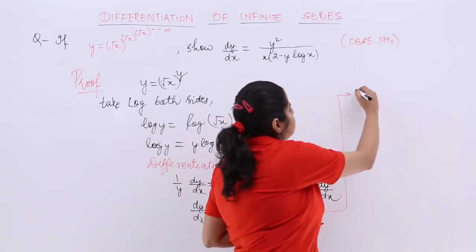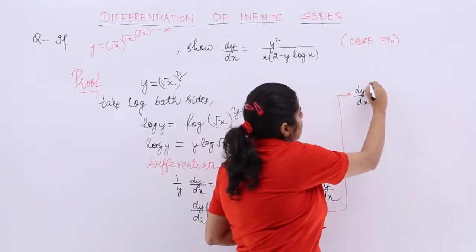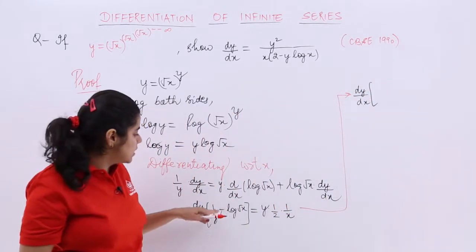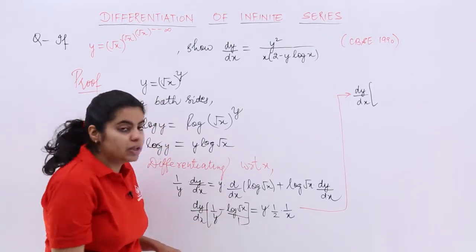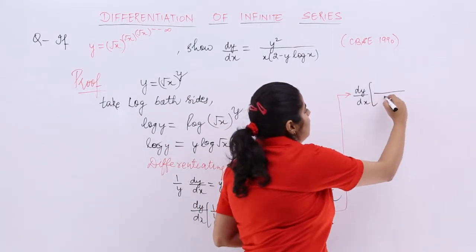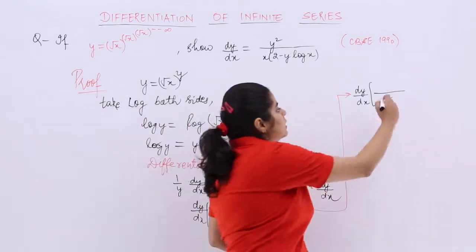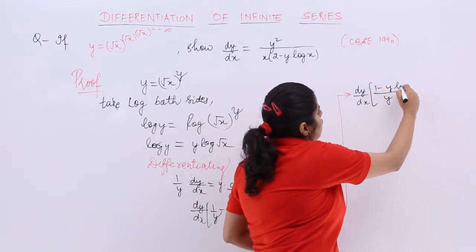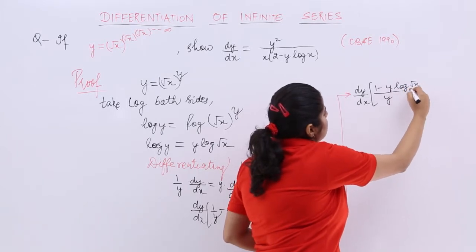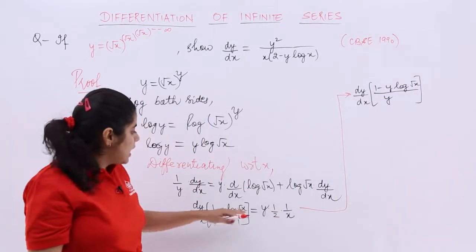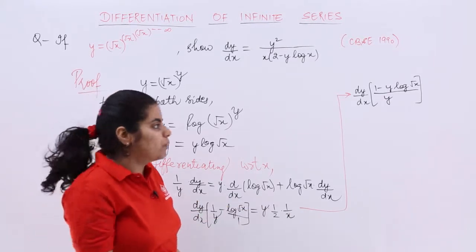dy by dx is here. In the bracket, what you have to do is, 1 and here if you take the LCM, so denominator becomes y, numerator is what? 1 minus y log root x. And here it is y upon 2x.